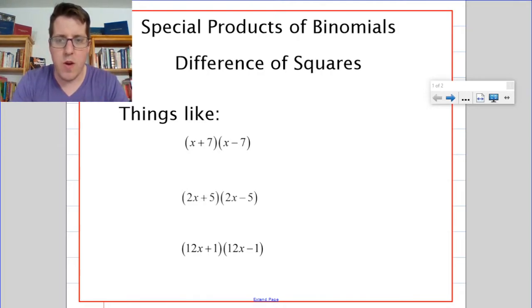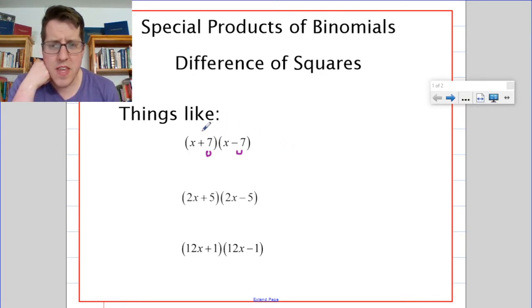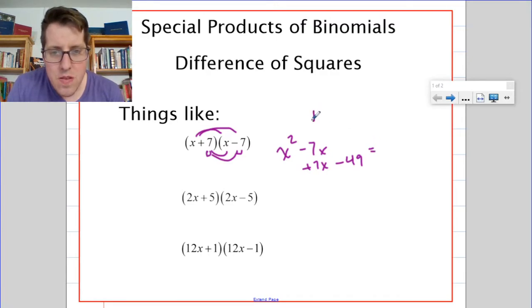A difference of squares is something like x plus 7 times x minus 7. The two numbers here are going to be opposites of each other, so we're going to have something like a plus 7 and a minus 7. When we multiply those together, there's going to be some canceling out. So let's FOIL. We're going to get x squared minus 7x plus 7x minus 49. When that combines, the negative 7x and the positive 7x are going to cancel out, and we're going to be left with x squared minus 49.